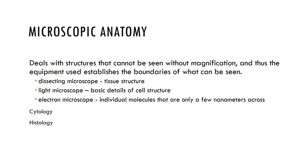Microscopic anatomy — micro means small — concerns structures too small to be seen with the naked eye. There are different types of microscopes: in our lab we use the compound light microscope, but there are also dissecting microscopes and the electron microscope, which allows us to see even finer detail. Within microscopic anatomy, cytology is the study of individual cells, and histology — histo means tissues — is the study of tissues and their functions.